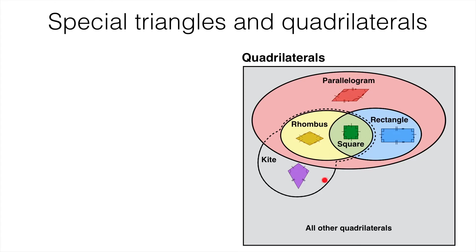Next we have the kite. The kite has some properties that make it similar to a rectangle — with a rectangle we had two pairs of edges of equal length, two long sides and two short sides, and the same is true for a kite. However, there is a key difference: in the rectangle and parallelogram it is the opposite sides that are equal in length. With the kite we actually have two pairs of adjacent sides of equal length — two sides that are next to each other and the same length, and another pair of adjacent edges that are the same length.